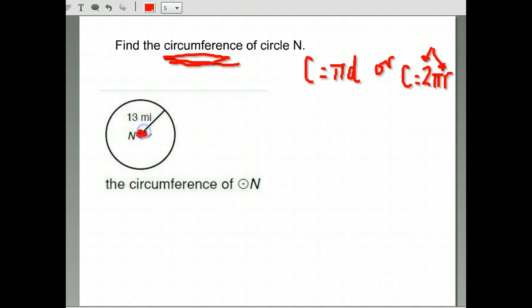So in this picture, what are we given? We have circle N. We're given the distance halfway across, which is our radius. So I'm going to use the second formula since I was given radius.